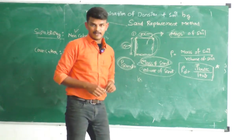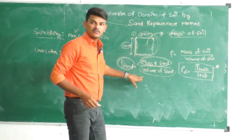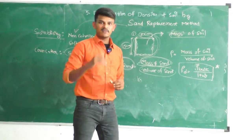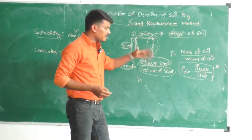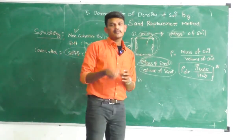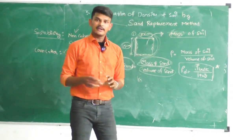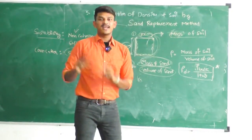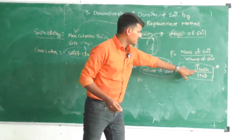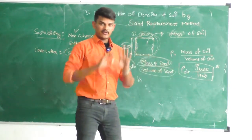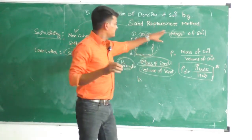If we know the mass of sand occupying the excavated volume and the density of the sand, we can calculate the volume. That volume equals the volume originally occupied by the soil sample. With mass and volume known, we calculate bulk density as mass divided by volume. Then by determining the water content, we calculate dry density using the formula: γd = γ_bulk / (1 + water content).